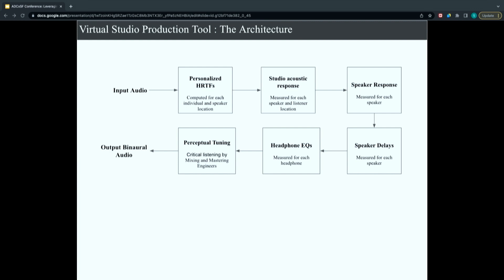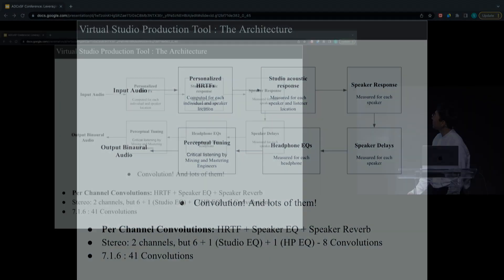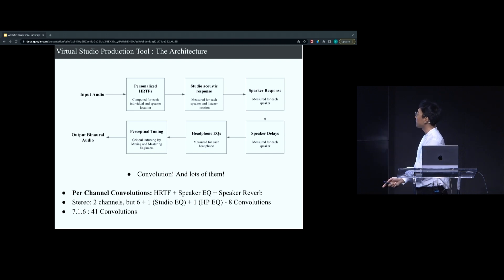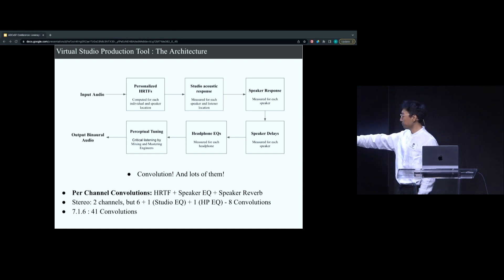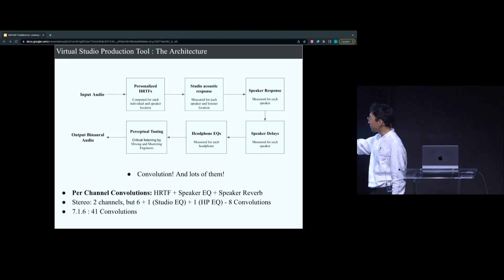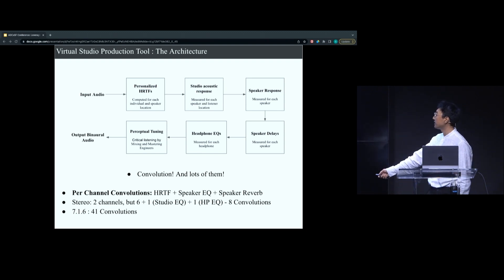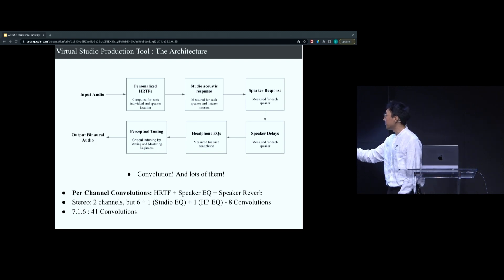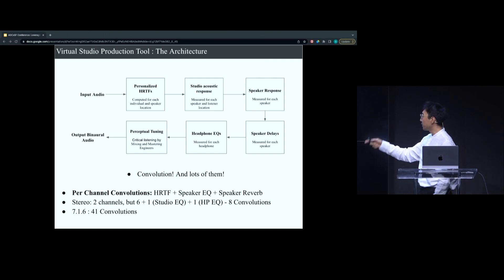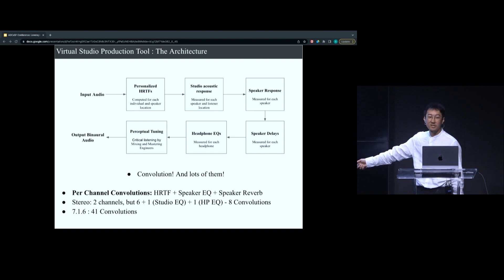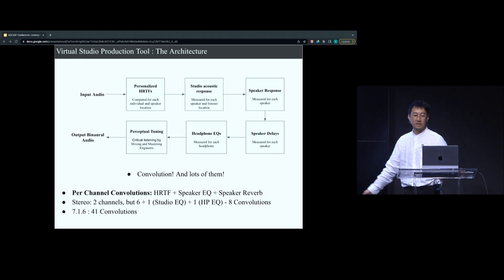The key takeaway is that there are a lot of convolutions. Each step involves convolution: HRTF, overall studio response, speaker response, headphone EQ. Just to give you an idea, per channel you have your HRTF, speaker EQ, and speaker reverb — three per channel. For stereo, that's two channels, so six convolutions, plus an overall room EQ, plus the headphone EQ — coming out to eight convolutions total. Or take Alan Meyerson's 7.1.6 room: you already have 41 convolutions. So it's quite a lot.